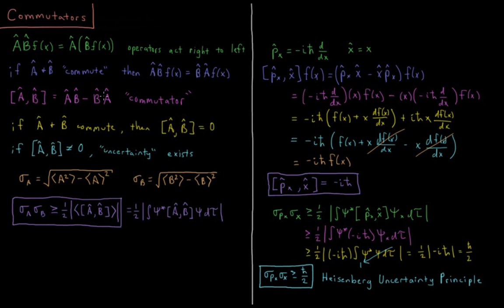So we have the commutator of A and B. Alright, so if A and B commute, as we say, then this operator, the commutator, is going to be equal to zero. If A and B do not commute, if the commutator is not zero, then there exists some uncertainty relationship between the operators A and B.